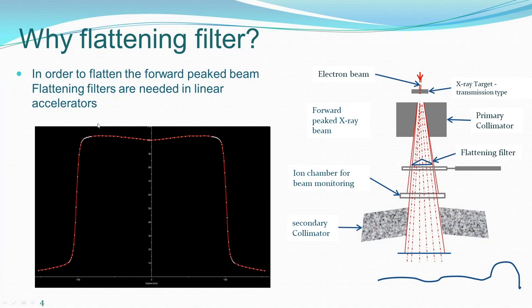The final resultant beam profile became a flat beam profile. You could note it is not strictly flat — there is a dip at the middle, meaning the central axis dose is lower than the off-axis dose. This we refer to as the horns. The reason is that one flattening filter is designed for a particular energy and reference field size; when you go to other field sizes, it may not be exactly flat.